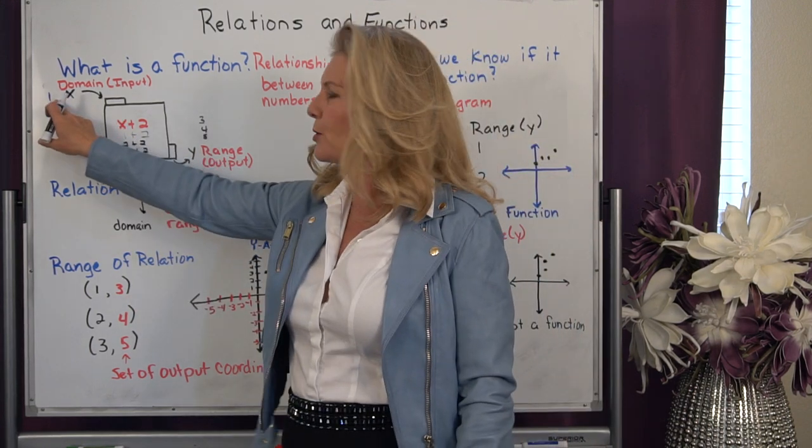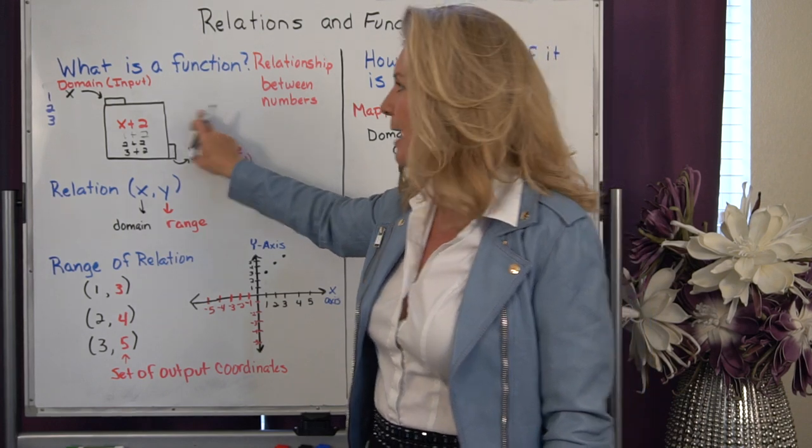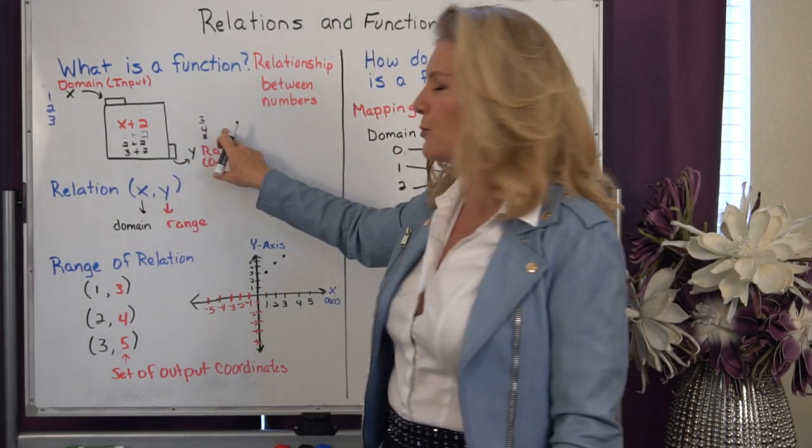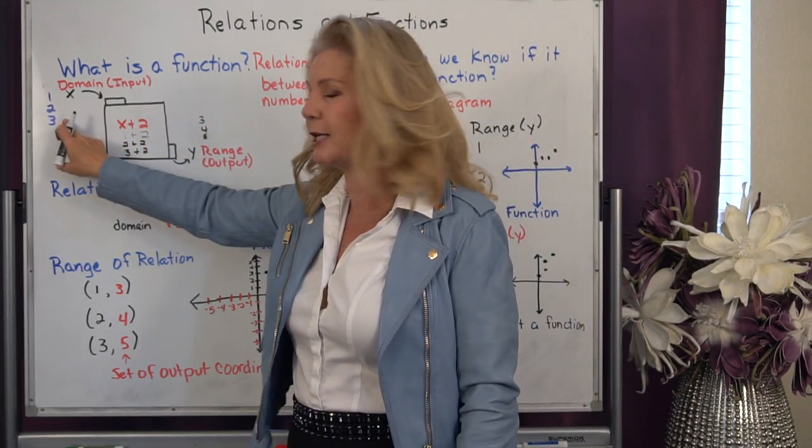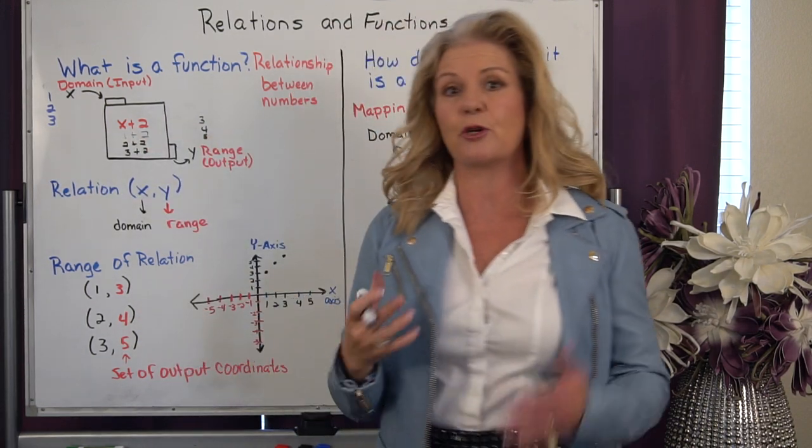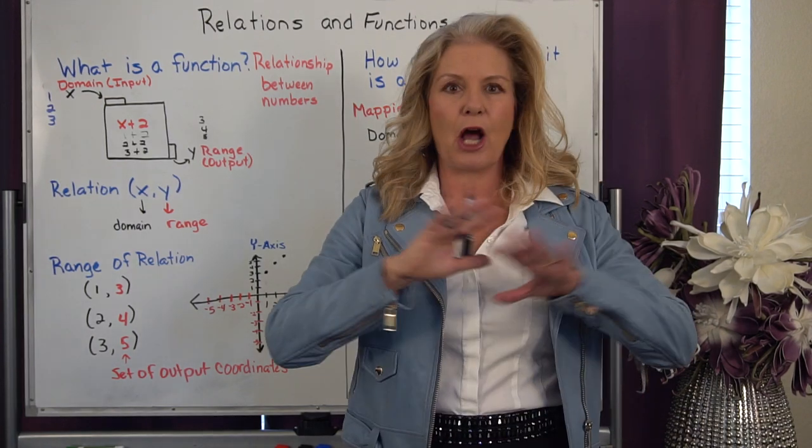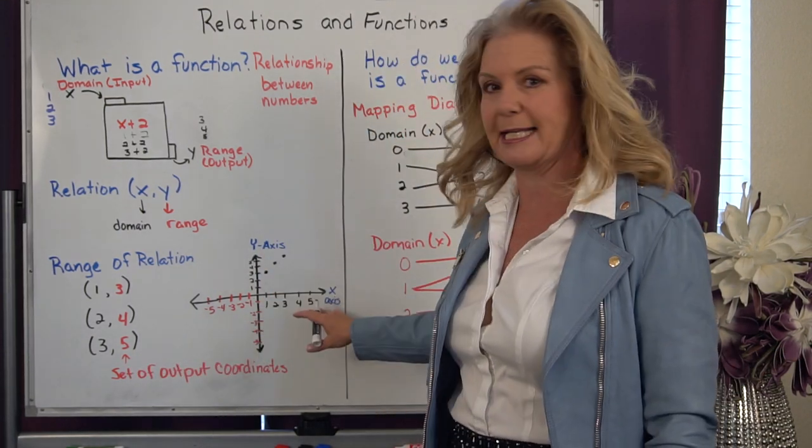And we can see our ordered pair of one going in matched up with three coming out. Two going in matched with four coming out. Three going in matched with five going out. So we can write that as an ordered pair. And we know that ordered pairs can always be graphed on coordinate planes.